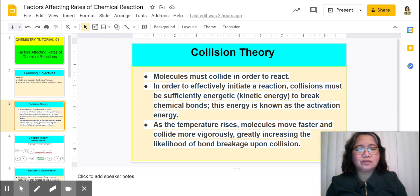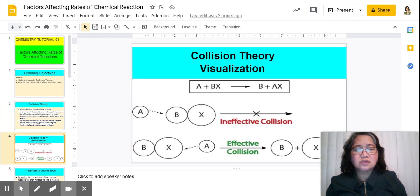And last, as the temperature rises, molecules move faster and collide more vigorously, greatly increasing the likelihood of bond breakage upon collision. So this is the collision theory visualization. They must react or collide with the correct orientation for the collision to be effective.